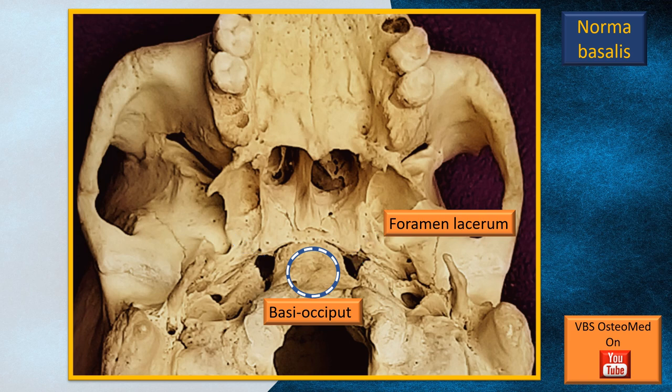On either side of this basi-occiput, you can see a rather irregular foramen — that's the foramen lacerum. You will also be able to identify the bones in this vicinity, namely the basi-occiput and a little in front, the body of the sphenoid. Laterally, the tip of the petrous part of the temporal bone is another structure to remember.